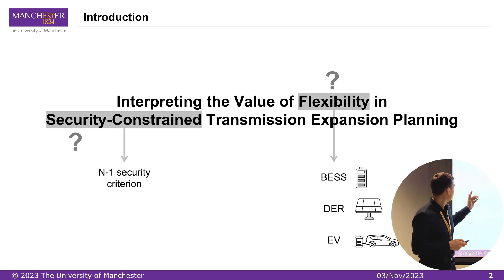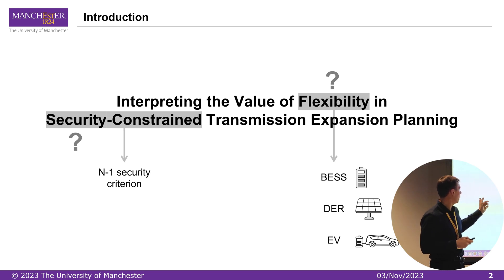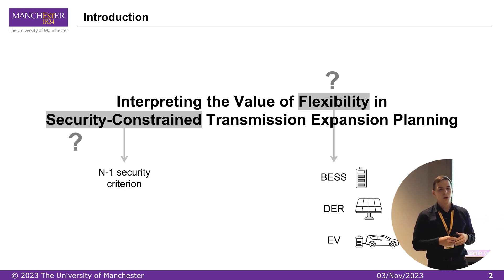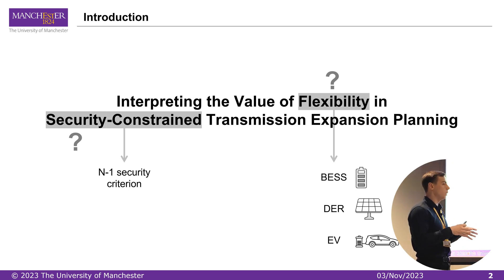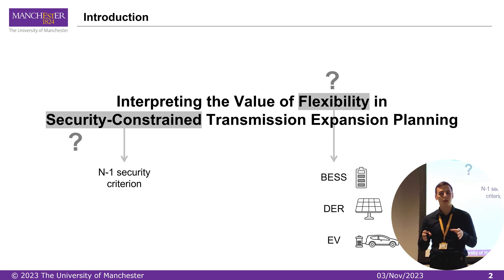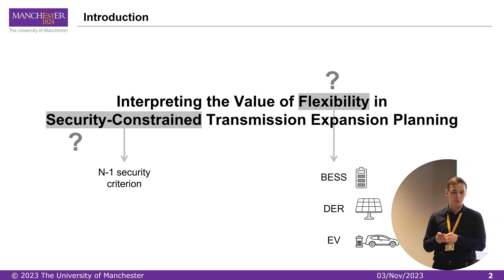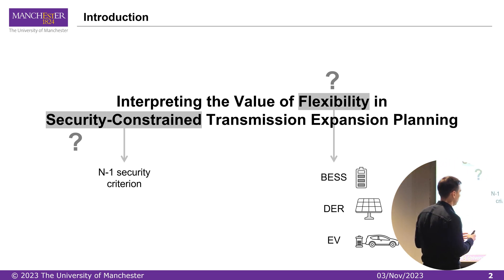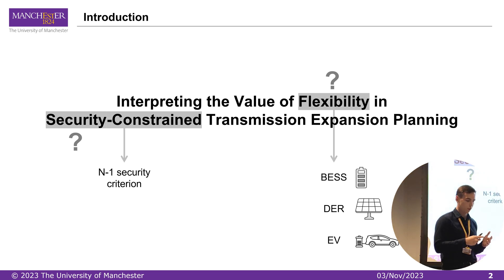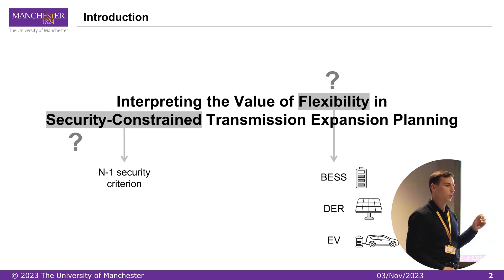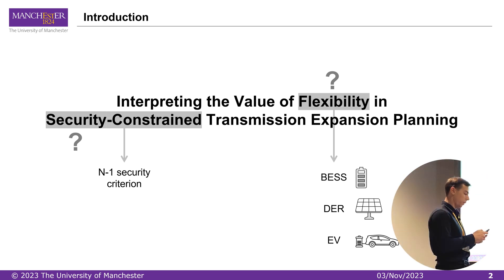The next term is security constraint planning. This usually means that we include the N-minus-one security criterion, which means that system operation must remain feasible for any single contingency. So if we lose any single element of the system, the operation still should be feasible. This criterion becomes especially important due to the ongoing integration of stochastic renewables. Formulating and solving such planning models with security constraints is a very challenging task.